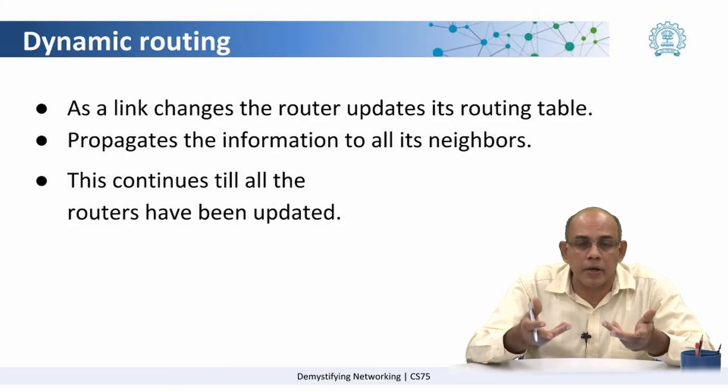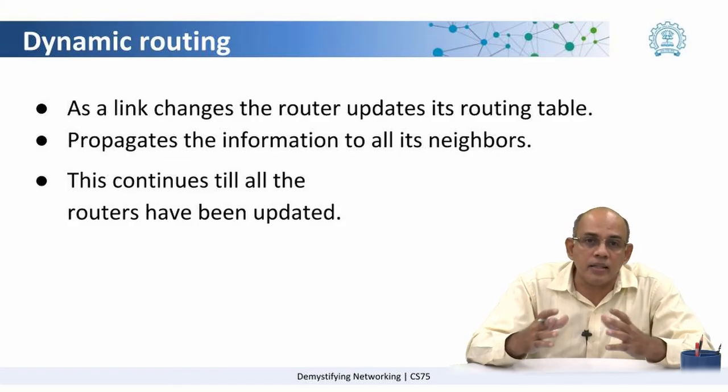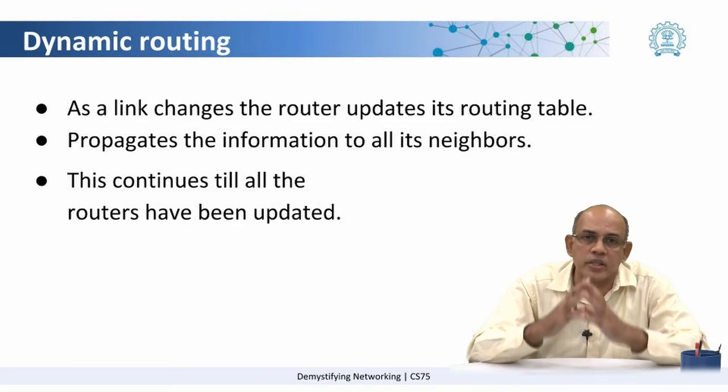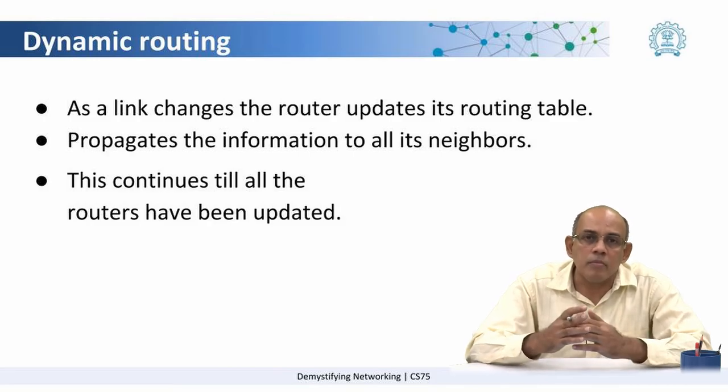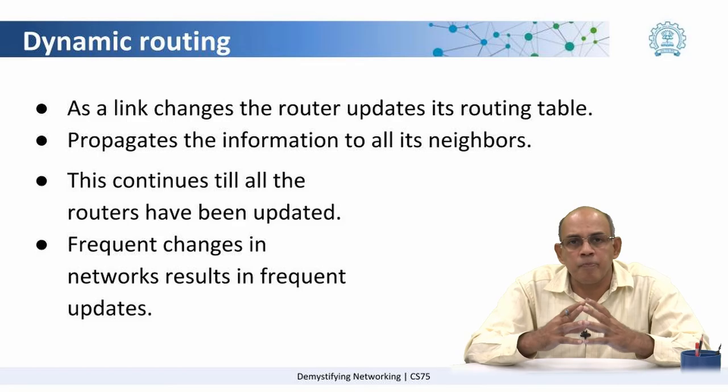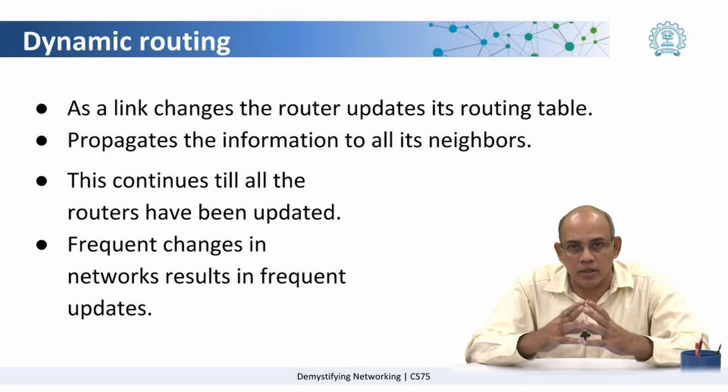After a while the link may come back up, in which case again the router has to change its routing table and propagate this information throughout the network. So in the case of a distance vector algorithm, when links go up and down frequently, a lot of change has to happen in the network. However, the distance vector algorithm is still a very good first step towards understanding how routing tables are created and propagated in the network, and distance vector algorithms also work well for small networks. Hence, we will see the distance vector algorithm in a little more detail.